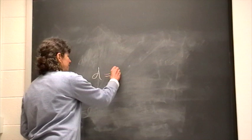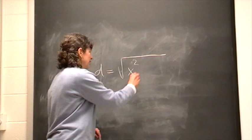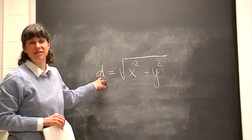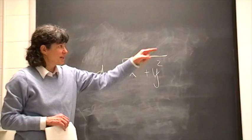And so what you would do to find the distance is you would just count the number of squares along the x-direction and square it, count the number of squares along the y-direction and square it, add those two numbers together, and take the square root.